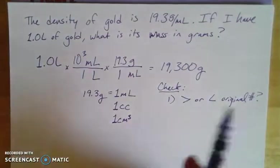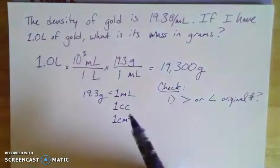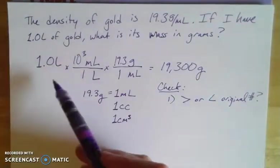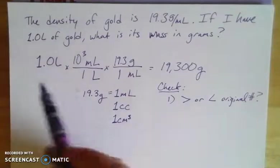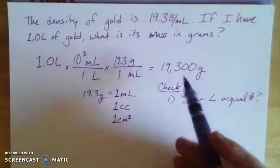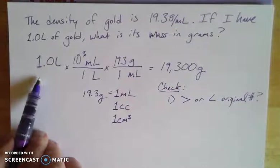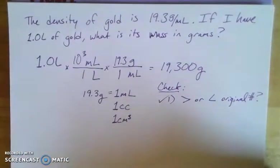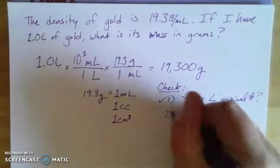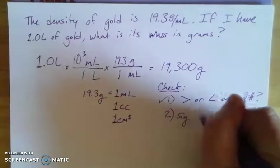Our original number was a liter of gold. We know it has a density of 19 grams per milliliter and there's a thousand milliliters in this liter, so we're expecting this number to be quite a bit larger than one. So far so good - I don't distrust my calculator yet. The second thing we have to do is